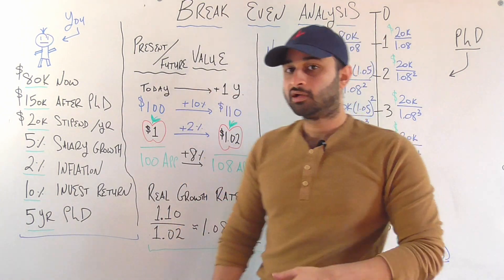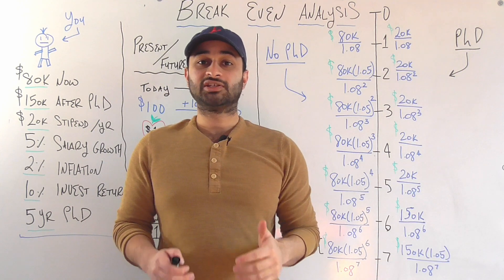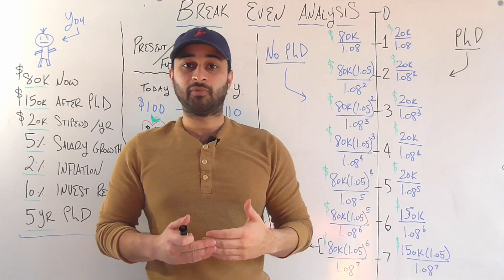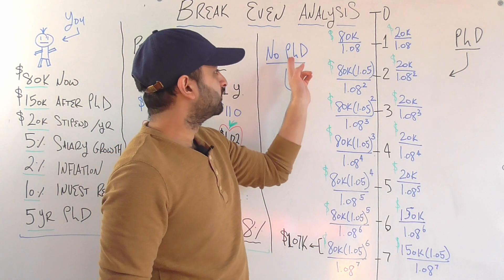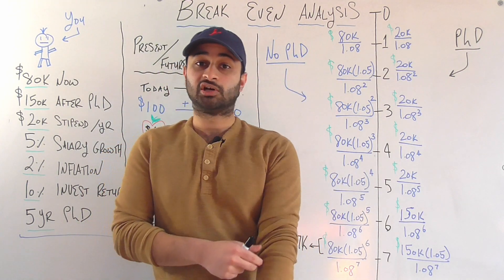Because of the same reasons we talked about here. Since this money is going to come in one year, we need to divide it by 1.08 to get the value of that money today. And that's why the first year of not getting a PhD, the present value of that would be 80,000 divided by 1.08.